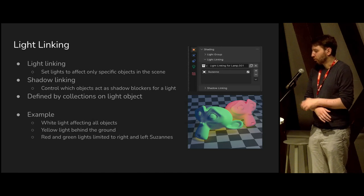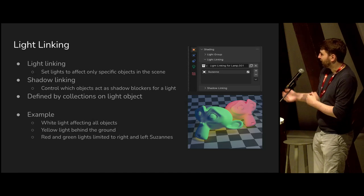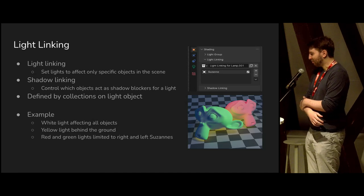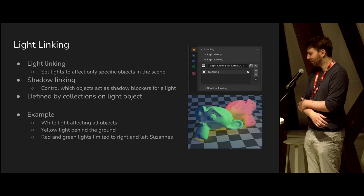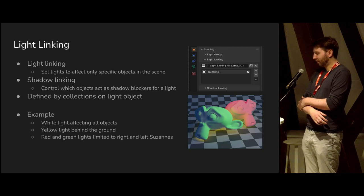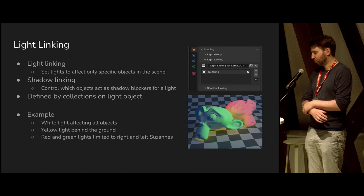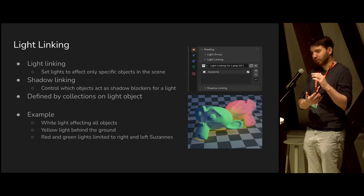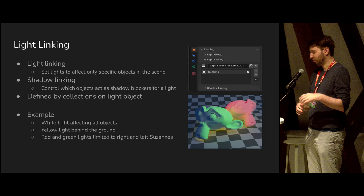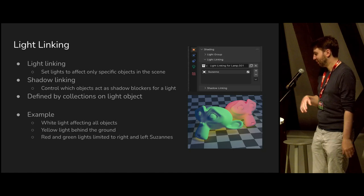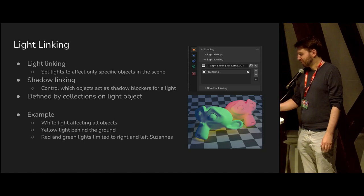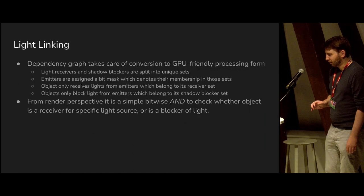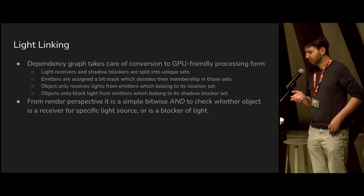Here's a simple programmer art example of light linking: a white light affects the entire scene, a yellow light behind the ground lights two monkeys from below without the ground casting shadows, and then a red light on one monkey and a green light on the other. This illustrates what you can do. Now I'll go into the implementation details.